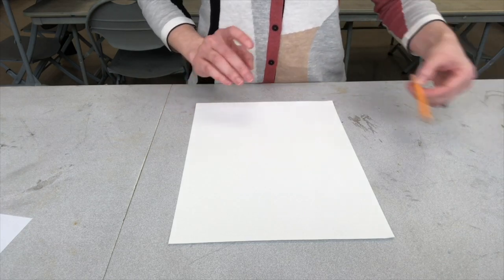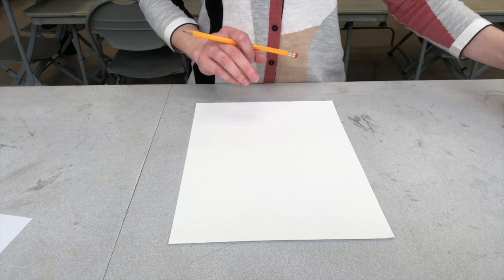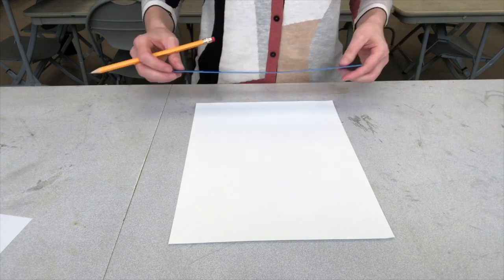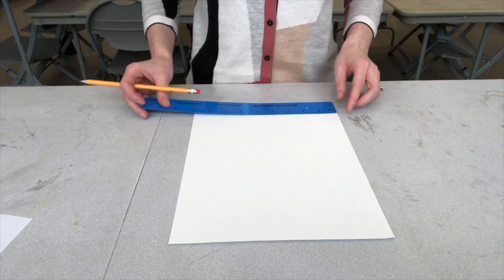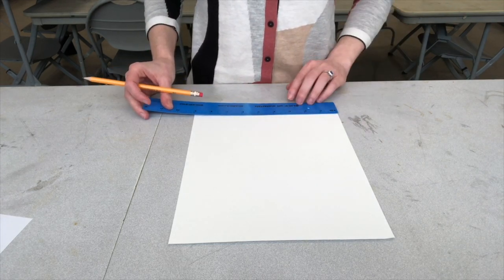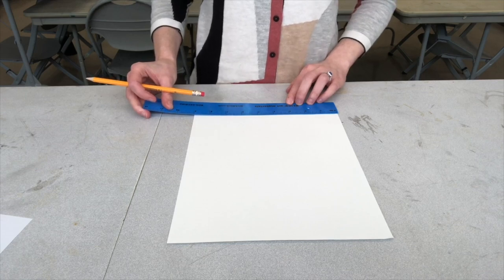It doesn't matter what size square as long as the paper is even on both sides. So I'm going to start with a ruler and I'm going to see that the width of my paper is nine inches.